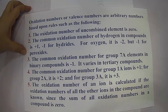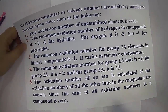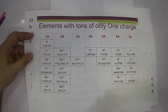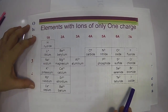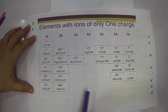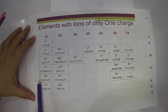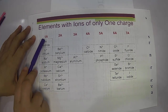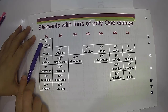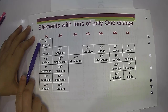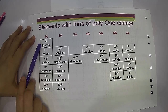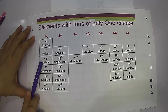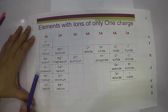To summarize, the rules relate to the position of the element in the periodic table. For elements with ions of only one charge: hydrogen as a hydride is negative one, but in some compounds it is positive one. Lithium, sodium, potassium, rubidium, and cesium all have a positive one oxidation number.